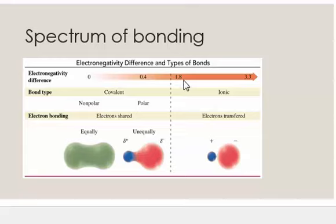When the difference of electronegativity is greater than 1.8, the bond is ionic and electrons are no longer shared.